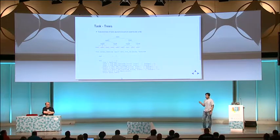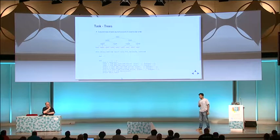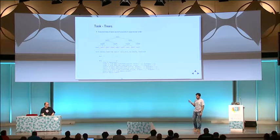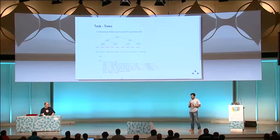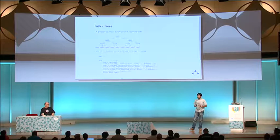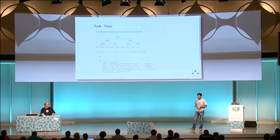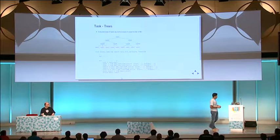One of the examples from the front slide was task trees. Celery by default doesn't come with this — you need to add the celery-task-tree module. You define a tree: first perform task A, then when done do two instances of task B in parallel, and when both are done do three instances of task C. Celery task tree is the solution for this kind of complex dependency workflow.